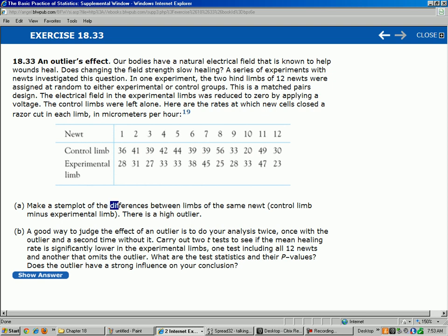Part A, make a stem plot of the differences between the limbs of the same newt. There is a high outlier. All right, so first of all, I don't care about the rates themselves so much. It says it's a matched pairs design. Anytime you have matched pairs design, you subtract the results from each of the pairs, and then we analyze the differences.